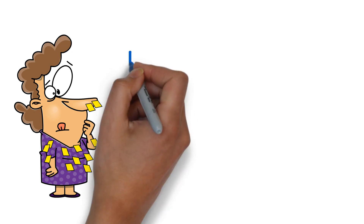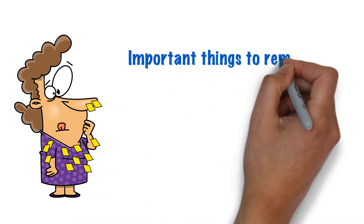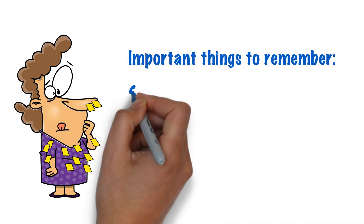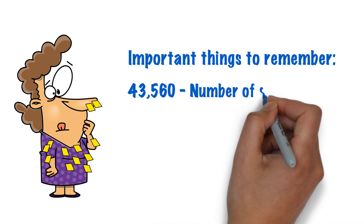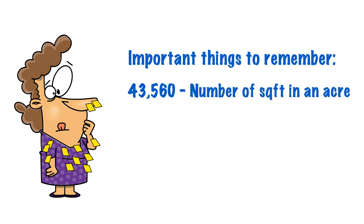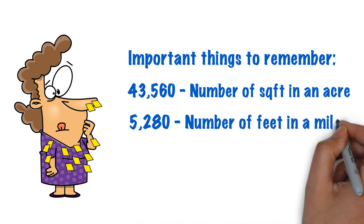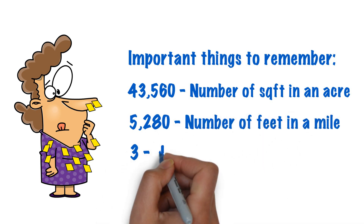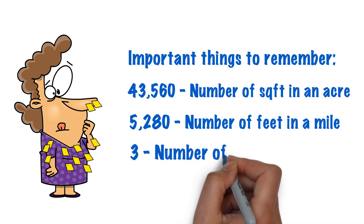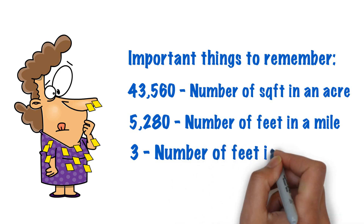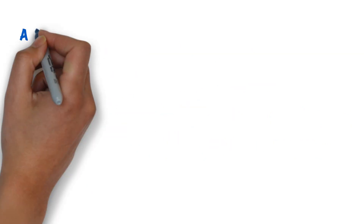First, we need to make sure you've committed a couple of things to memory from your pre-license class. The first one is 43,560 — that's the number of square feet in an acre. The next one: 5,280 feet in a mile, and 3 feet in a yard. These are things you're just going to have to memorize for the state exam, otherwise you're going to be in trouble.